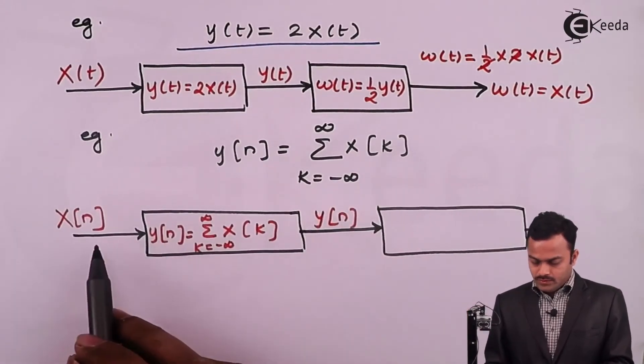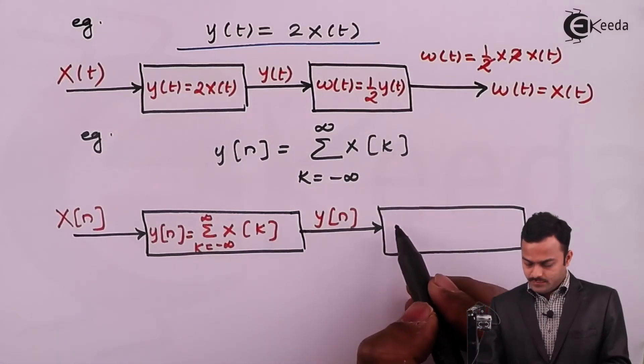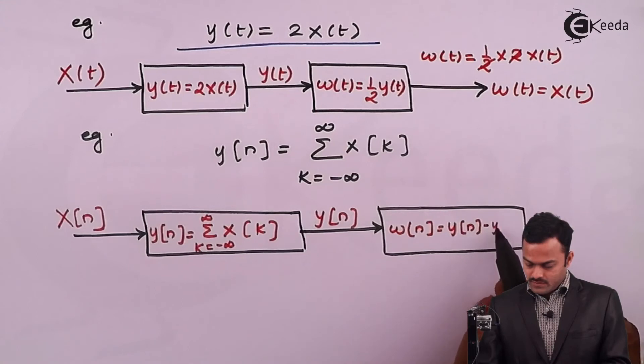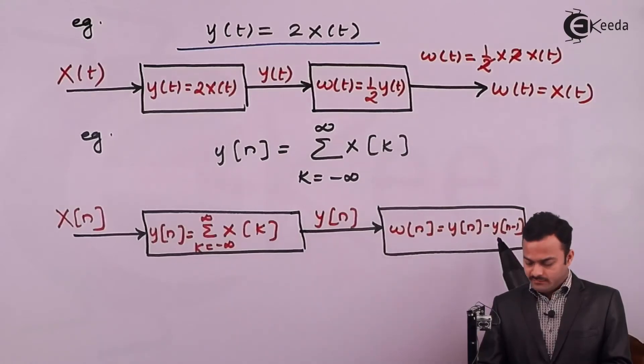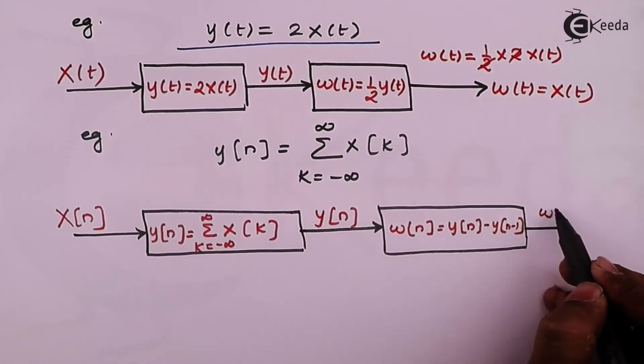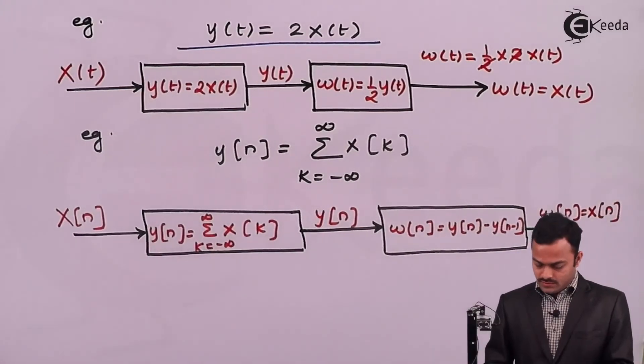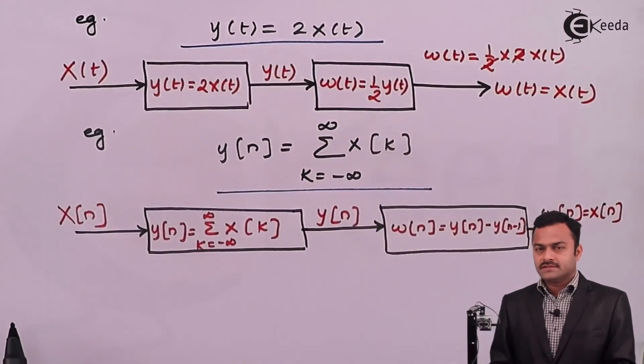And now I need to produce this signal once again, which can be done simply by having a system in place which will do this: y of n minus y of n minus 1. So if you do this, in the end we will get w of n which is equal to x of n. So the given system is an inverse system.